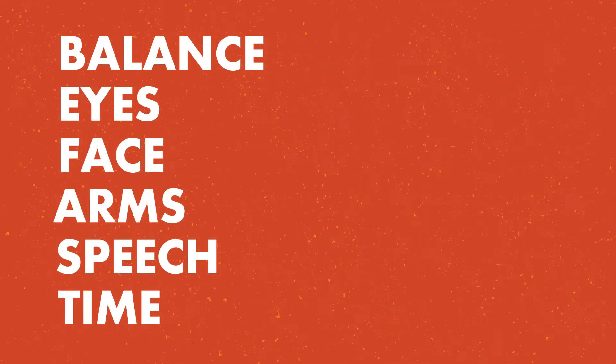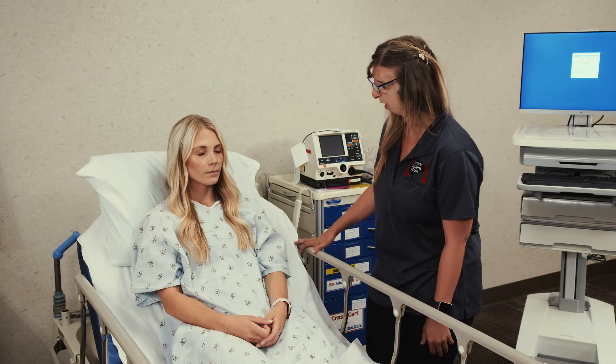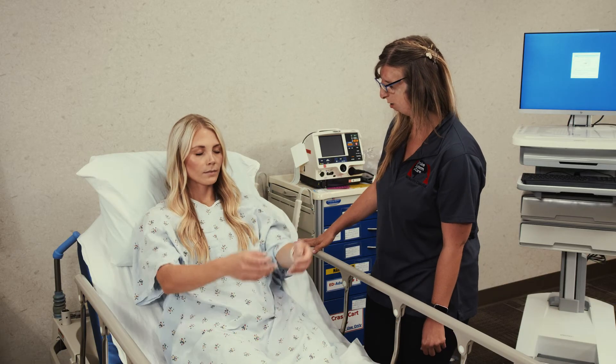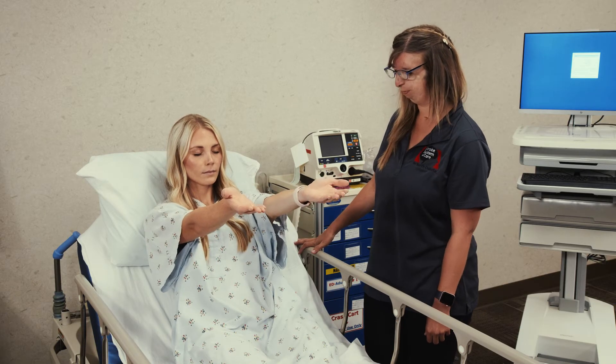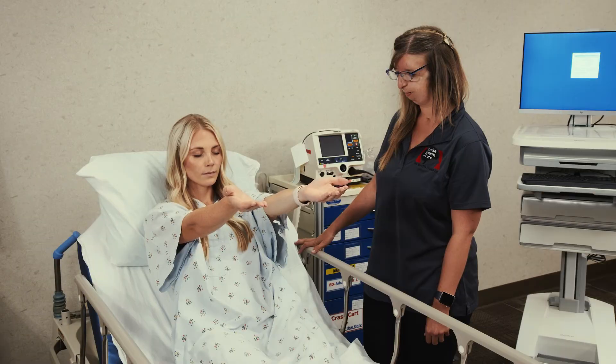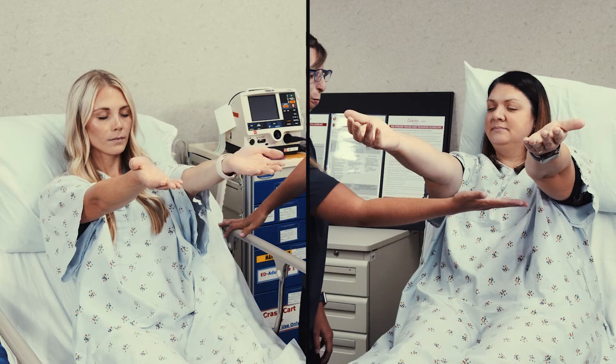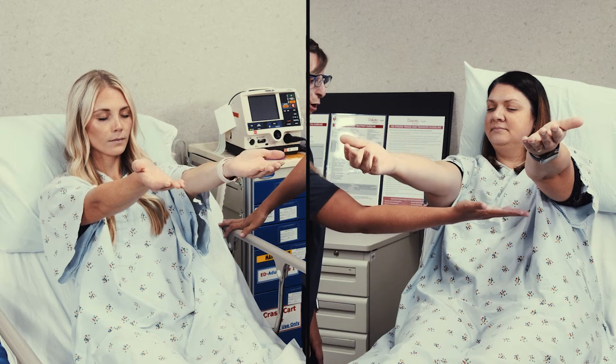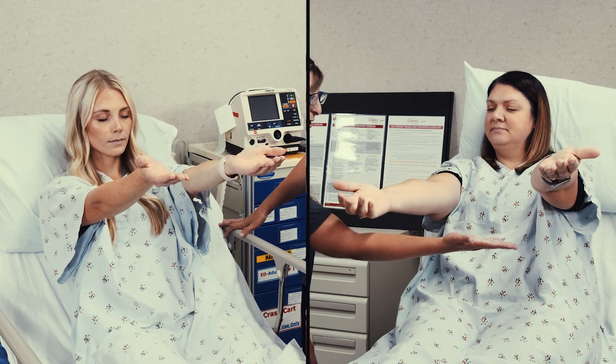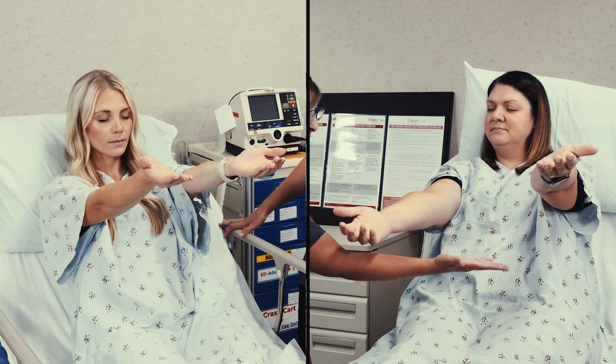Step two is to test your patient for arm weakness. Ask your patient to close their eyes, then raise and extend both arms straight out for 10 seconds. A normal finding is if both arms move the same or both do not move at all. An abnormal finding is if one arm either does not move or one arm drifts downward compared to the other. Remember, your patient's eyes should be closed for this exam or they may be able to compensate for an arm drift.